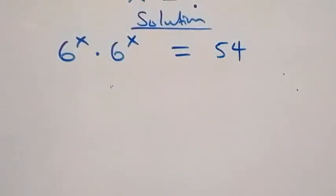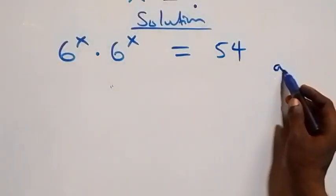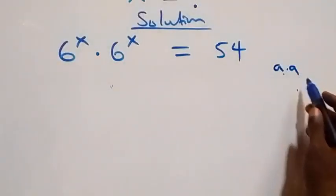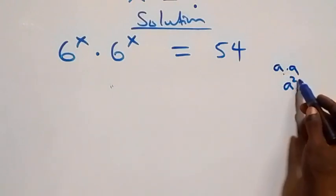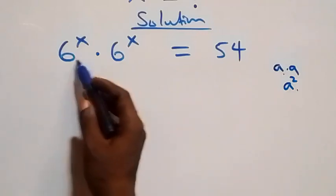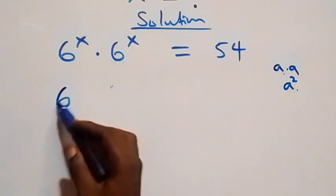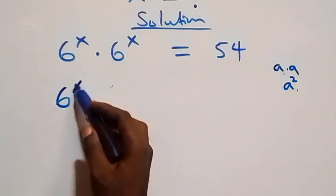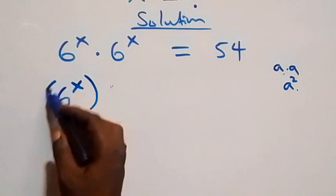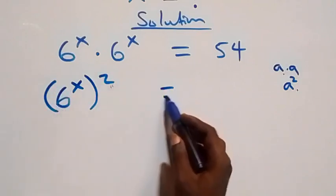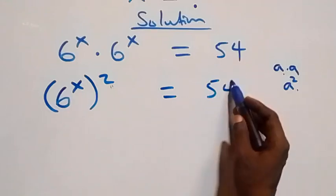What we have here follows from when we have a times a, which can be written as a squared. Here we are simply multiplying, so this becomes six raised to power x, all squared, then equals to fifty-four.